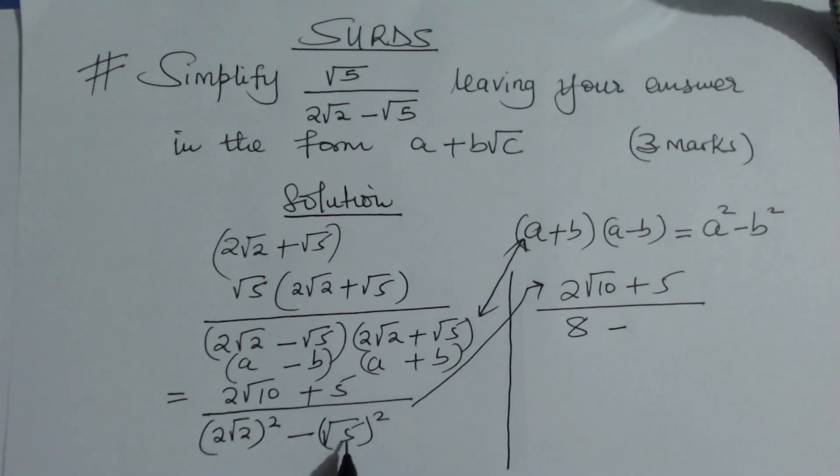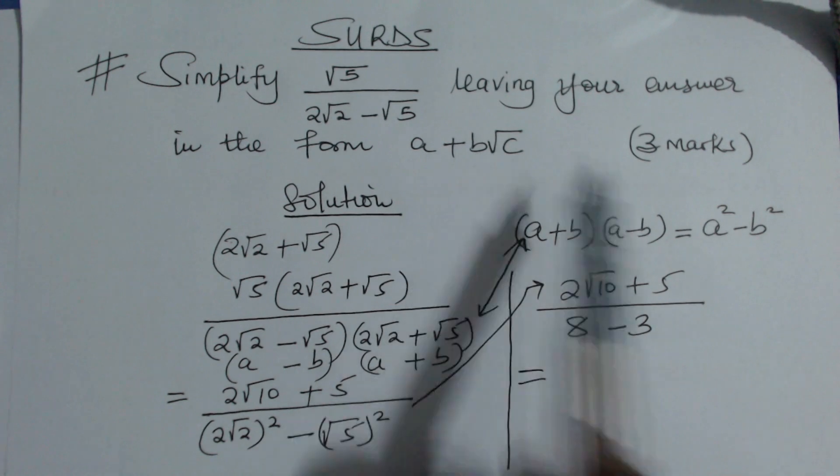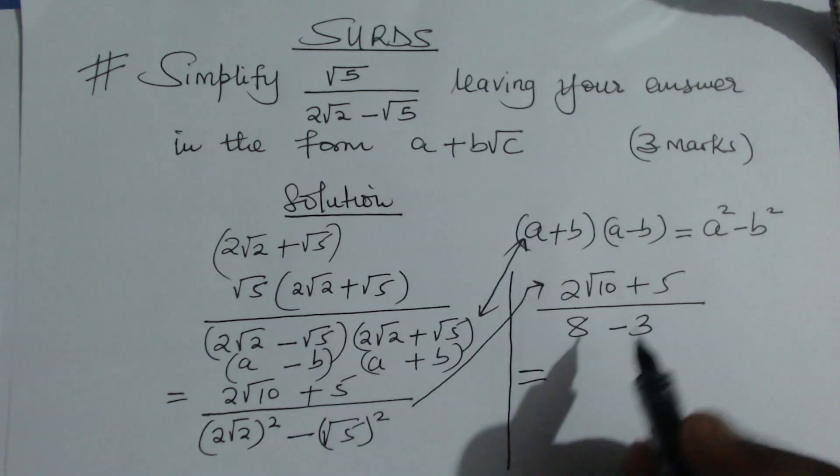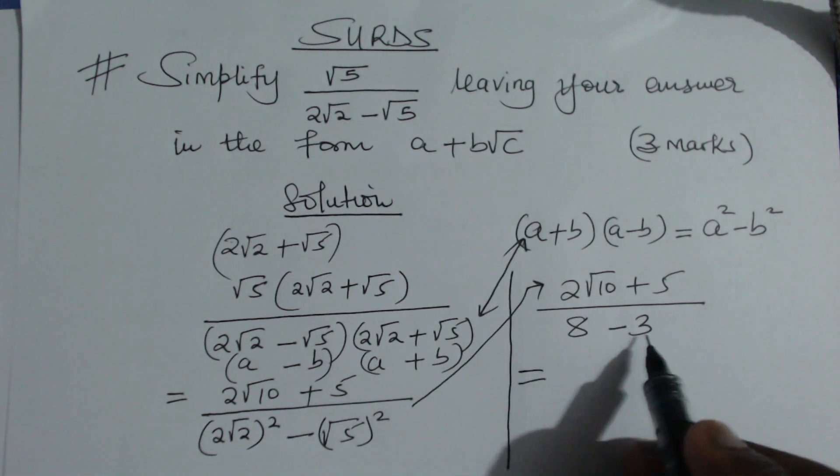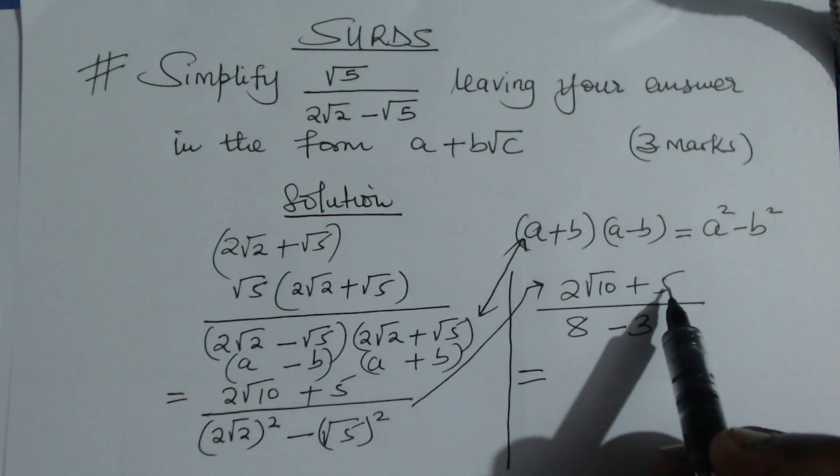We need to give the answer in the form a + b√c. So when you subtract in the denominator, you get 3. Organizing it in this form, you shall have 5, and this will be the same as writing the whole thing, 2√10 + 5, divided by 3.